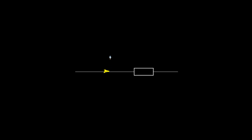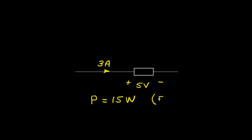Let's look at a few examples. Suppose we have a simple circuit element with a current of 3 amps flowing through it in one direction, and the voltage potential is greater on one side than the other by 5 volts. In this case, the current and voltage are not changing with time — we refer to this as a direct current circuit. The power is 3 times 5, which is 15 watts. Since the result is positive, we say this is a power sink — an element that is absorbing power.